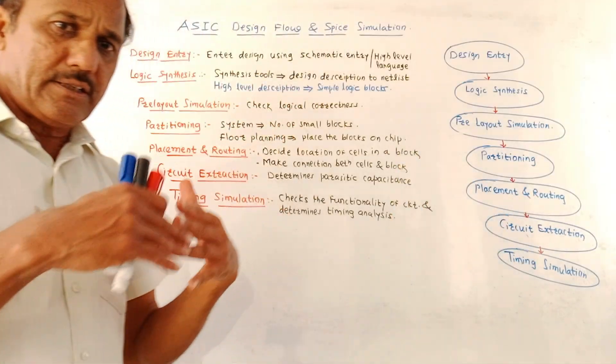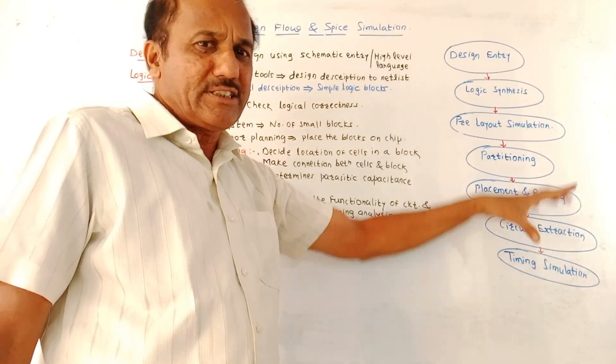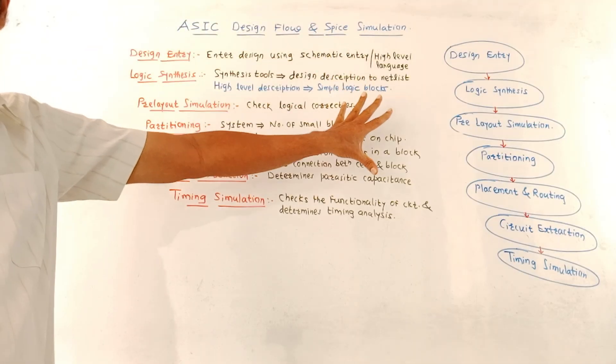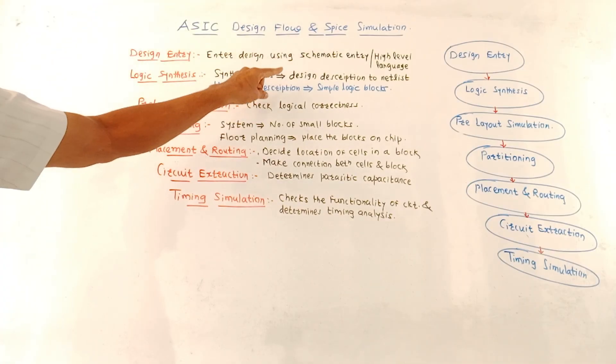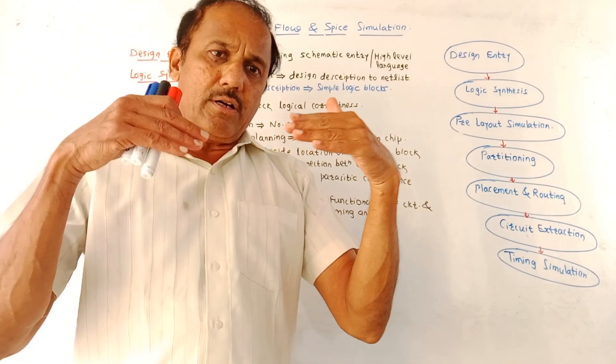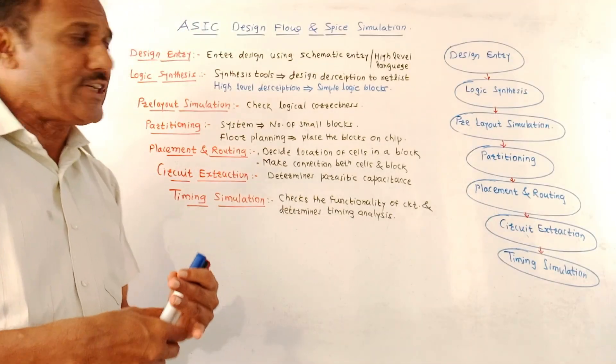And last block is timing simulation. As the name indicates, the timing simulation action will be performed by this block. This is also called post simulation block. I have written some important points related to this flow graph. First is design entry. As the name indicates, we have to enter design.